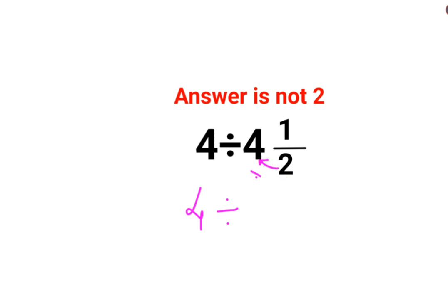And then add the numerator, which is plus 1, divided by 2. So this becomes 4 divided by 4 multiplied by 2 is 8 plus 1, gets you 9 upon 2.